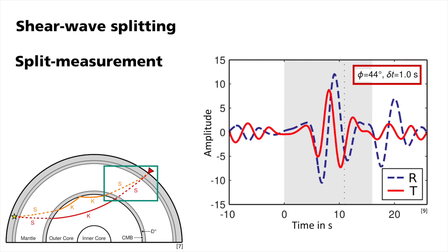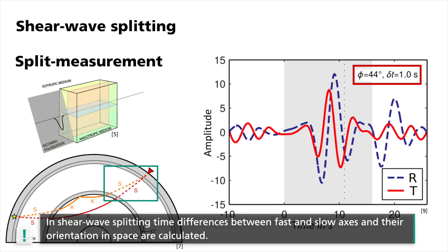In the second case, we observed clear arrivals on both the radial and transverse component. This indicates that the wave was split by an anisotropic medium. For such observations, we now want to determine the parameters that best describe the anisotropic material. These are the time difference between fast and slow axis of the splitted shear waves and the orientation in space.